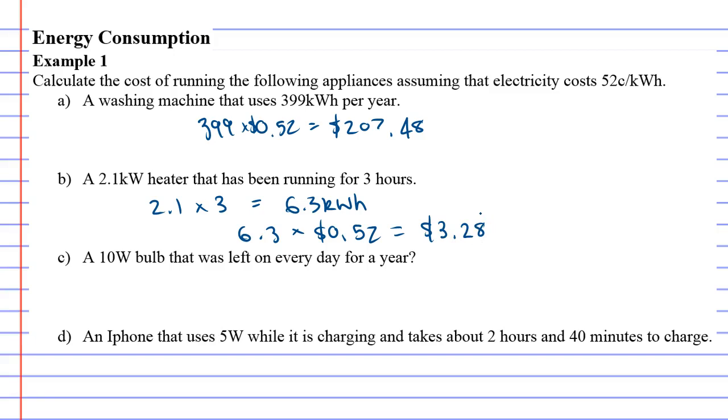Question C: a 10 watt bulb that was left on every day for a year. We often hear parents say don't leave the lights on. How much would it cost if it was left on every day for a year?